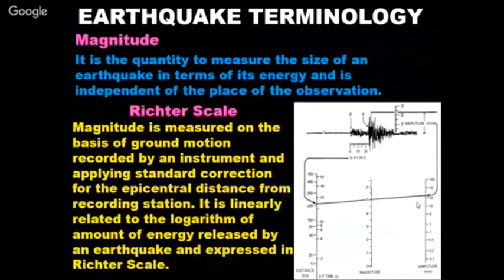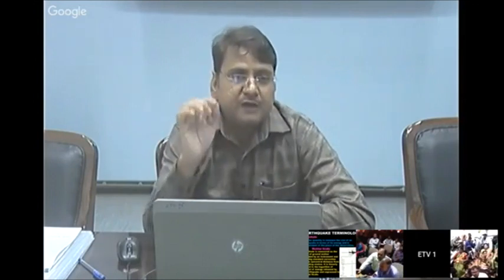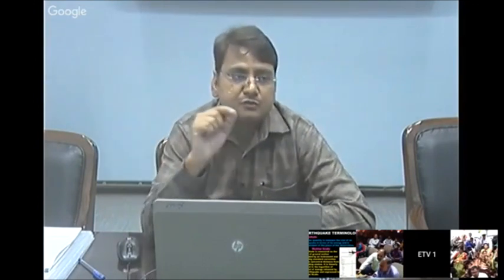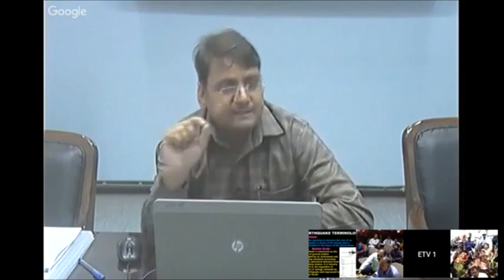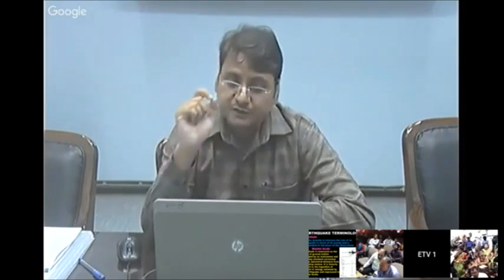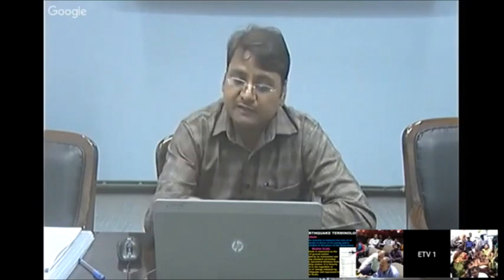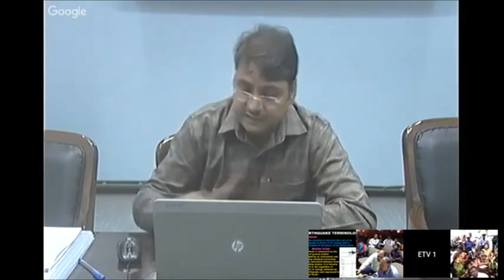Magnitude of an earthquake refers to the energy released during that earthquake, measured using the Richter scale. For example, a magnitude 5 earthquake in Kanpur is known everywhere by that single value. Intensity, on the other hand, is the damage occurring at a particular location and differs from place to place.